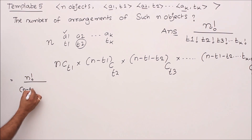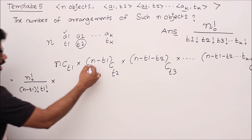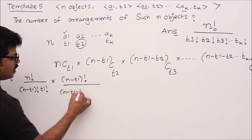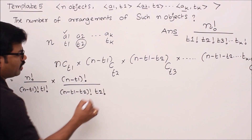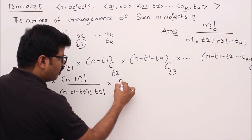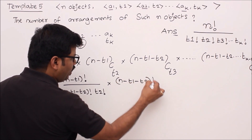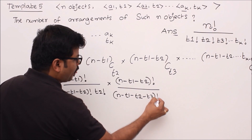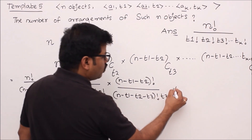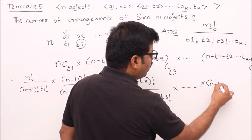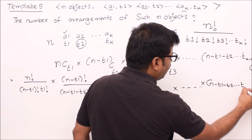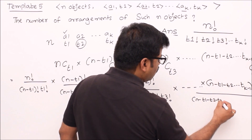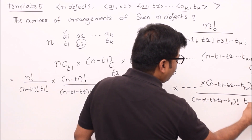Now let's expand each combination term. nCt1 equals n! divided by (n−t1)! into t1!. Then (n−t1)Ct2 equals (n−t1)! divided by (n−t1−t2)! into t2!. Then (n−t1−t2)Ct3 equals (n−t1−t2)! divided by (n−t1−t2−t3)! into t3!, and so on up to the last term which gives (n−t1−t2−...−t(k−1))! divided by (n−t1−...−tk)! into tk!.